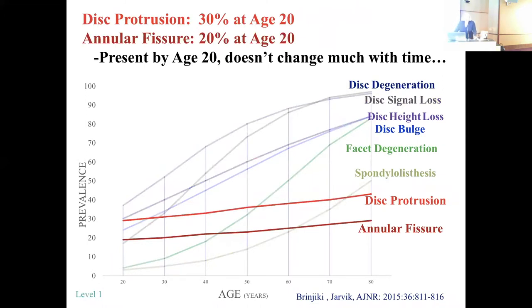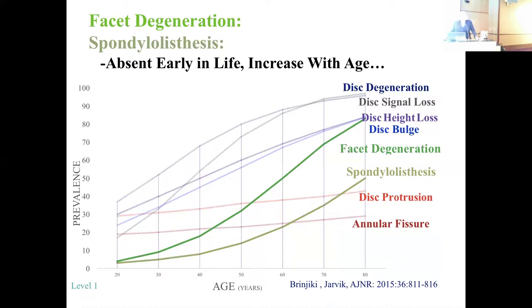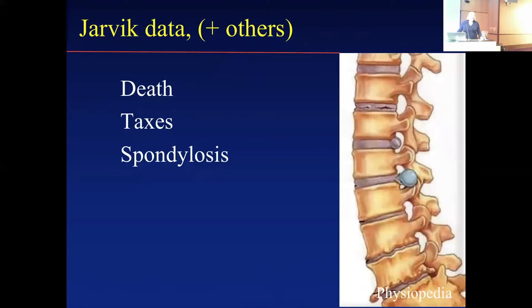By age 30, one in three of us has degenerative changes in our lumbar spines, defined as disc degeneration, signal loss, disc height loss, or disc bulge — and those are influenced by age and also by genetics. One in three of us at age 20 to 30 has a ruptured disc or disc protrusion in our lumbar spine. Annular fissures related to disc pressure are probably present early and don't change much over time. This data is actually the opposite of the general population feeling that discs wear out and rupture as we get older. Facet degeneration and spondylolisthesis are relatively absent early in life and increase over time. In summary, none of us is getting out of here without degenerative changes in our lumbar spine.